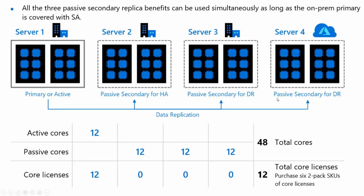Here is where it gets pretty cool. In this scenario you've got three on-prem and one cloud. Server one is your primary serving all traffic to your application. You've got your hot HA backup — you do not pay for that. Then you have a passive secondary for DR on-prem, say on the east coast or in another region. And then you can also put a DR copy in Azure without paying for those licenses. This is really where it all comes together: 48 total cores, but license-wise you're only paying for 12.